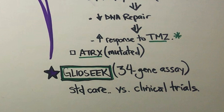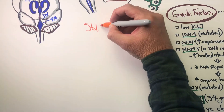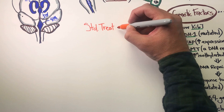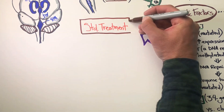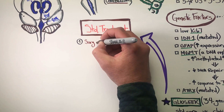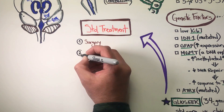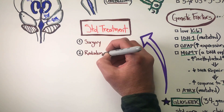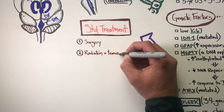Gliosec is a 34-gene assay that your medical oncologist may run to see if you are a candidate for clinical trials. There are many clinical trials being done right now for immunotherapy, laser therapies, interstitial thermal therapy, as well as intraoperative gels that are applied right at the time of surgery. So these can all be explored as well.